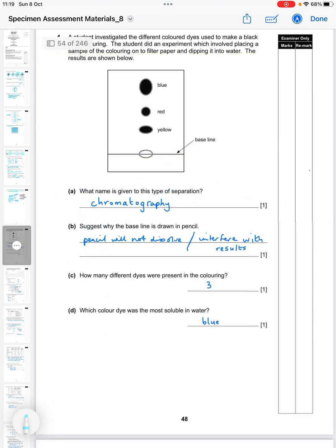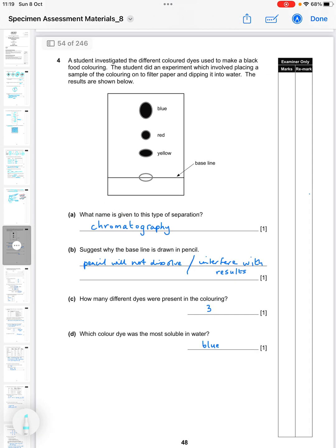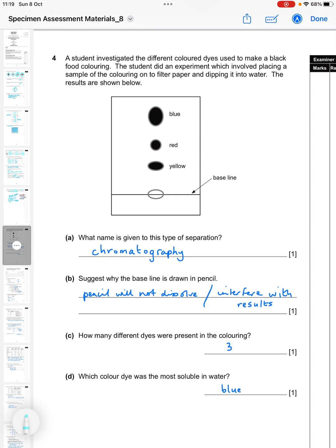Question four: a student investigated the different colored dyes used to make a black food coloring. The student did an experiment which involved placing a sample of the coloring onto the filter paper and dipping it into water. The results are shown below. What name is given to this type of separation? Straight away, chromatography. Suggest why the baseline is drawn in pencil - well, you don't want it to dissolve or to interfere with the results.